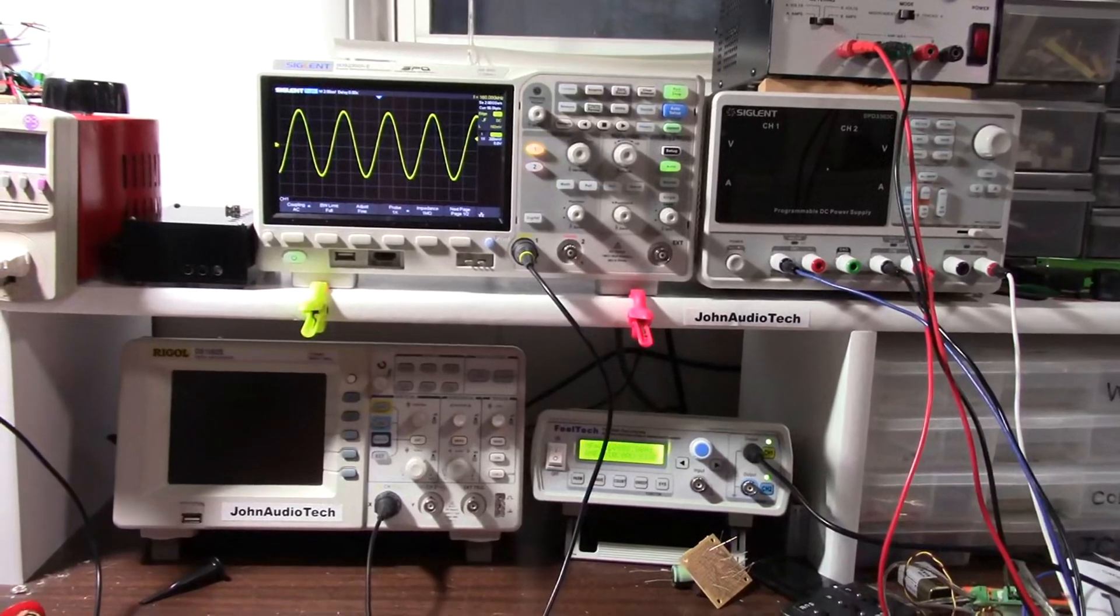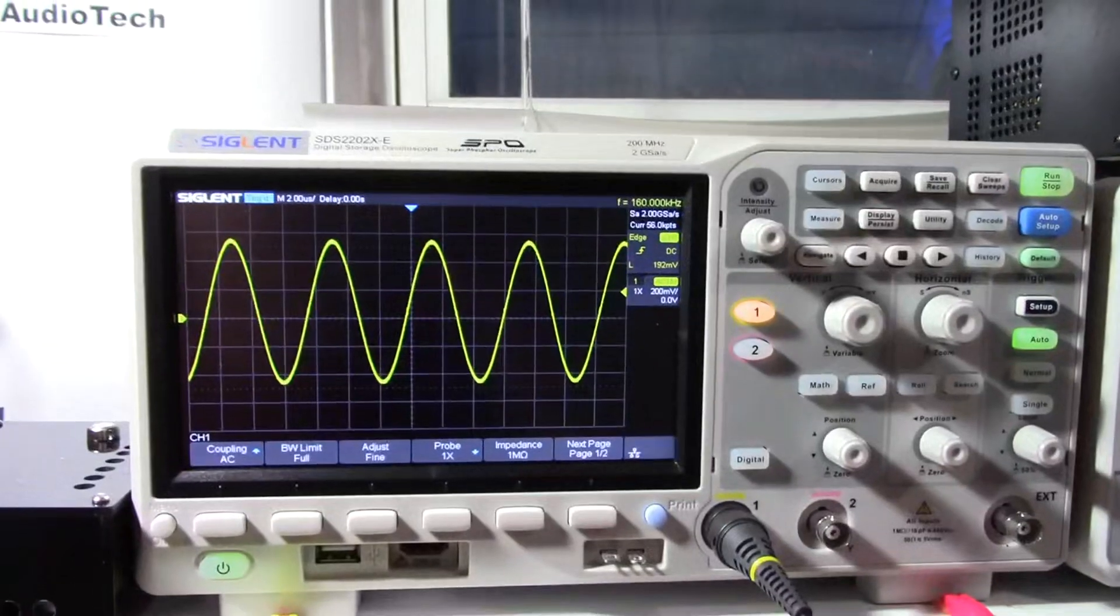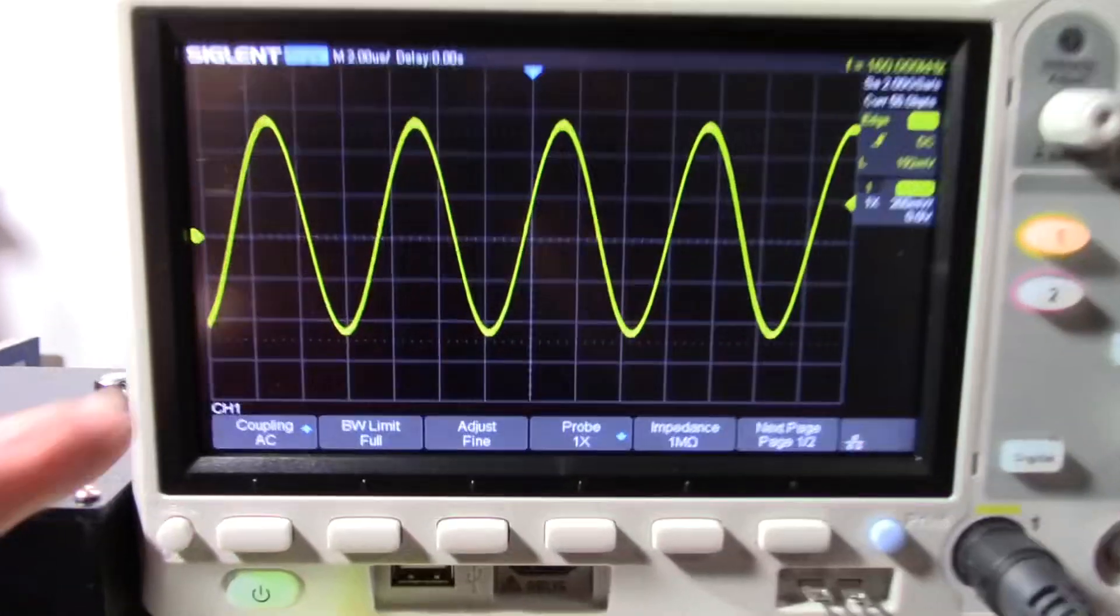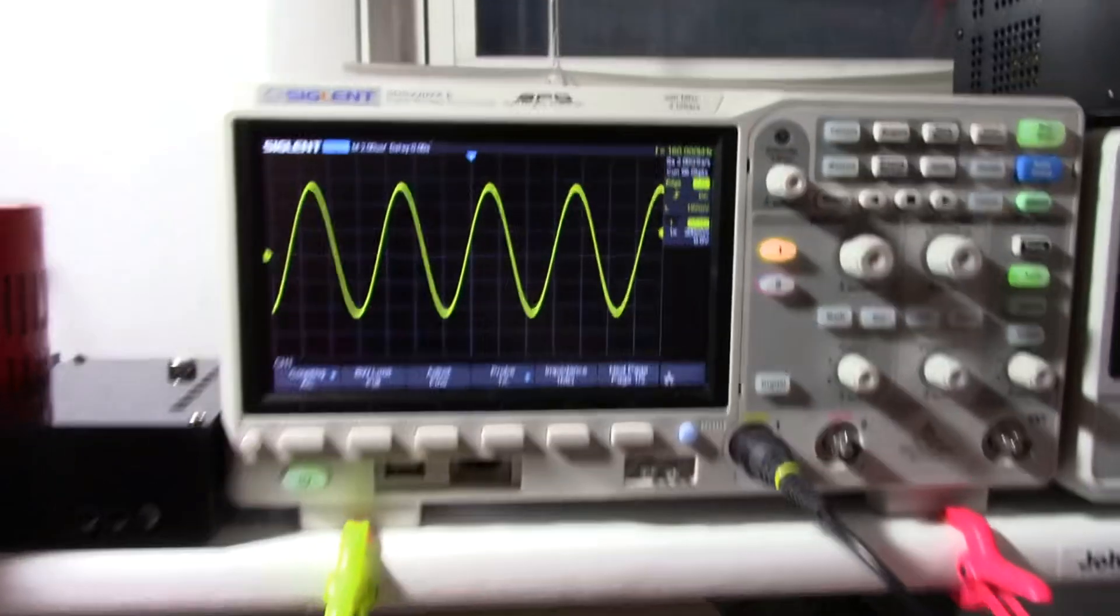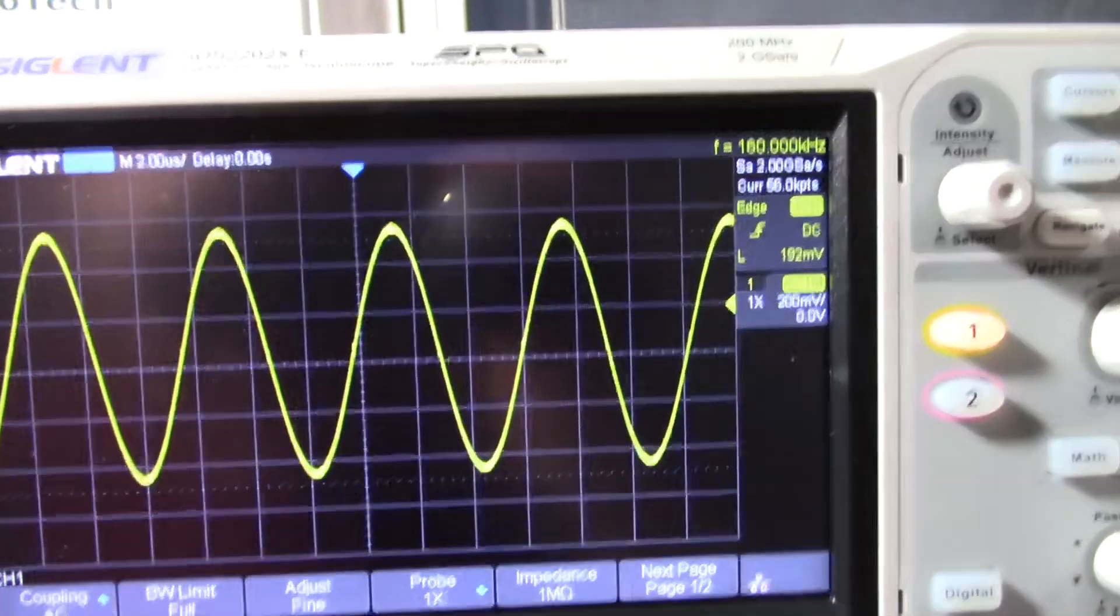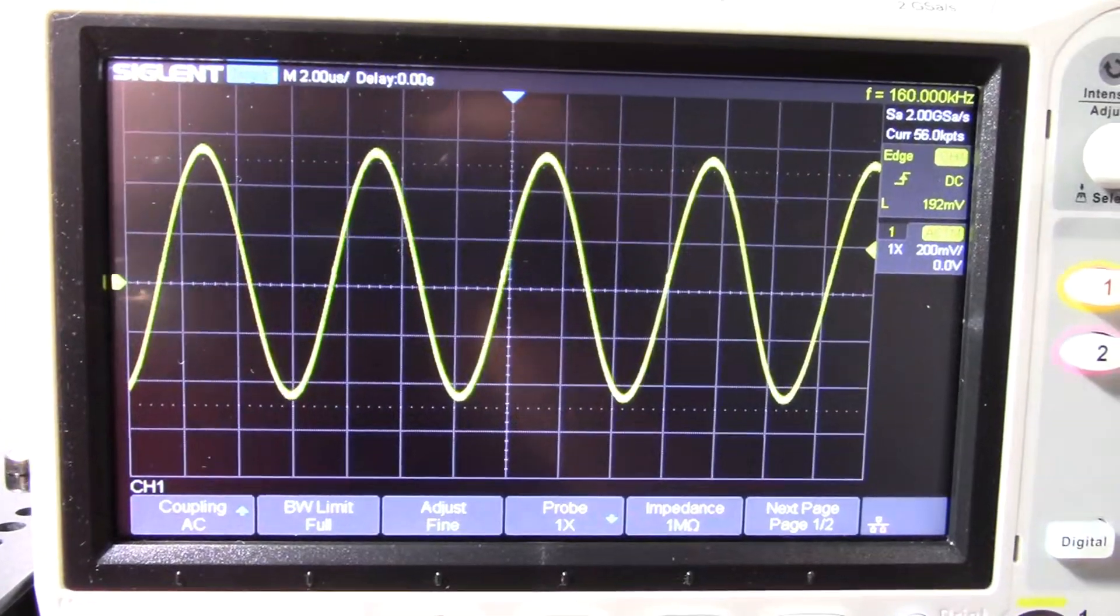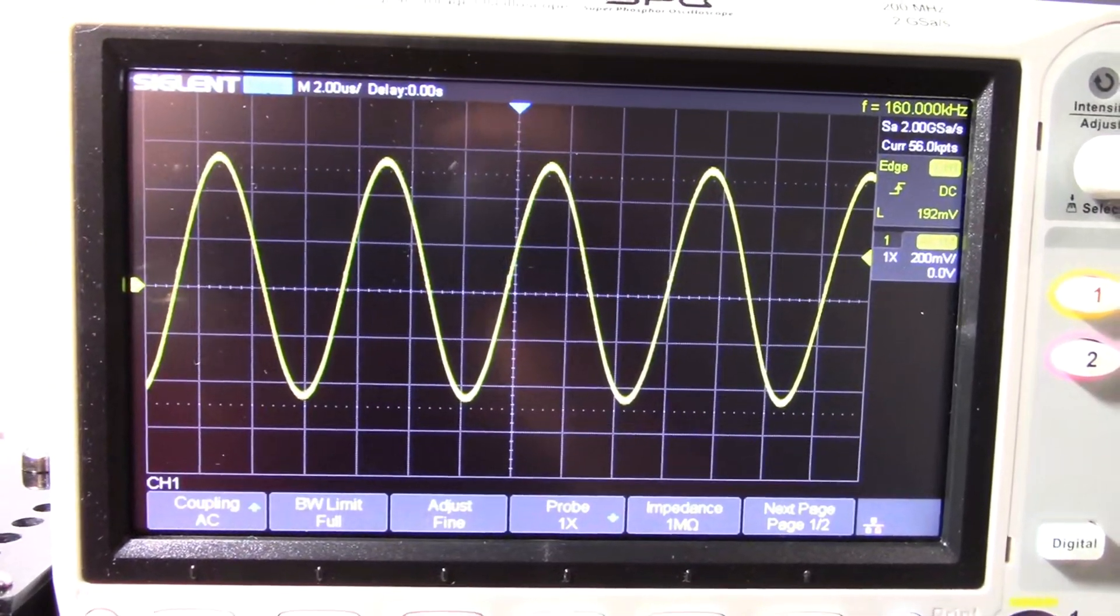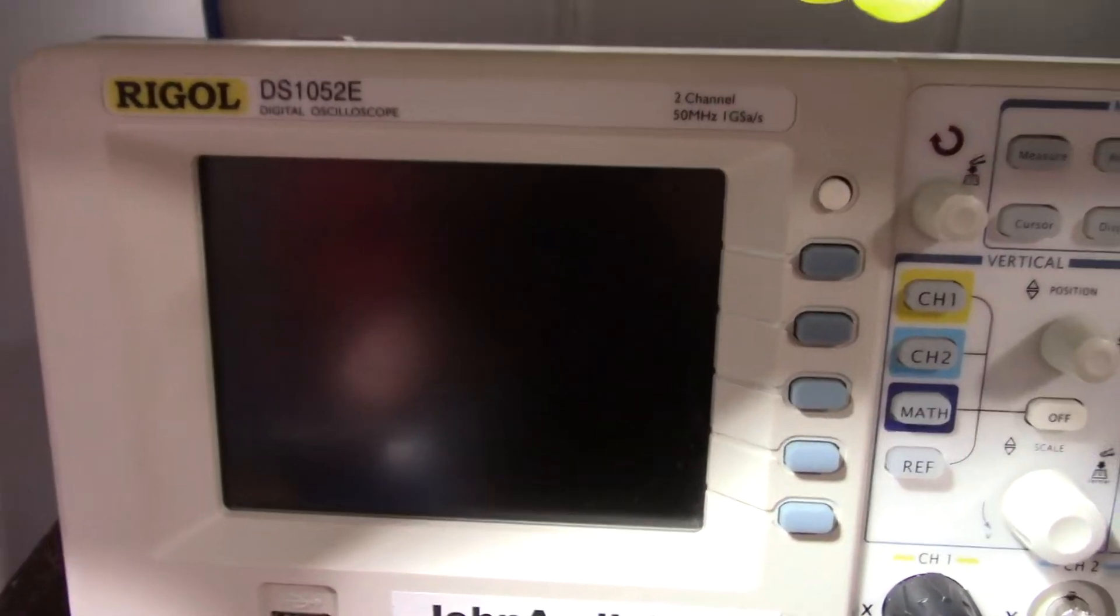Okay, I have the new scope set up on the bench here. Move the Rigol down here. And yeah, look at the difference in screen size. The only problem is they make all the text smaller. And since my eyes aren't the greatest, it is a little harder for me to read. But yeah, more information at a higher resolution. I think it's a 800 by 480. And this is like a 320 by 240 or something like that screen. So a big difference there.